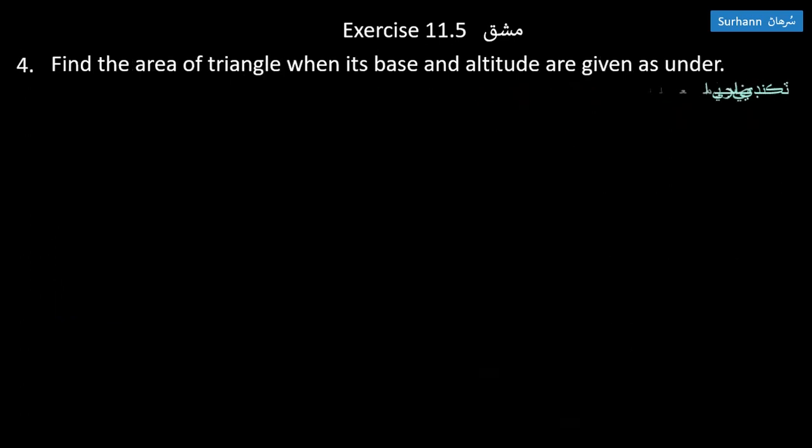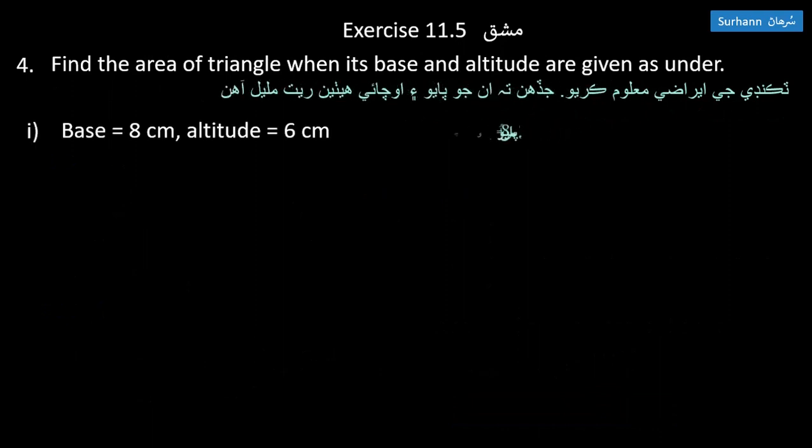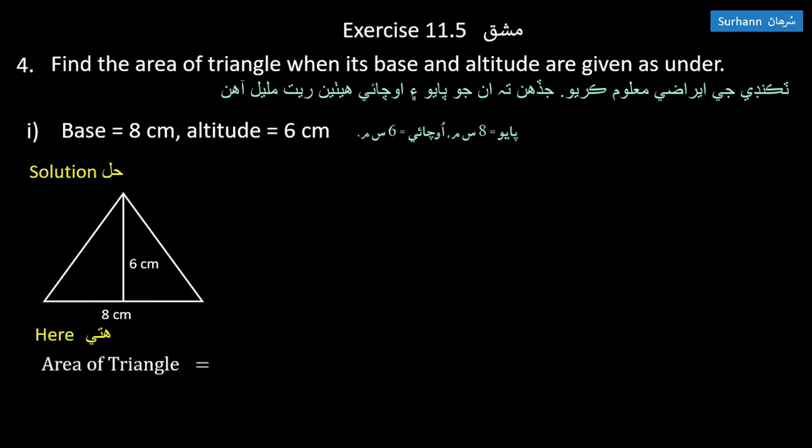Number four: find the area of a triangle when its base and altitude are given. Part one: base is 8 centimeters, altitude is 6 centimeters. The area of triangle formula is one-half times base times altitude.